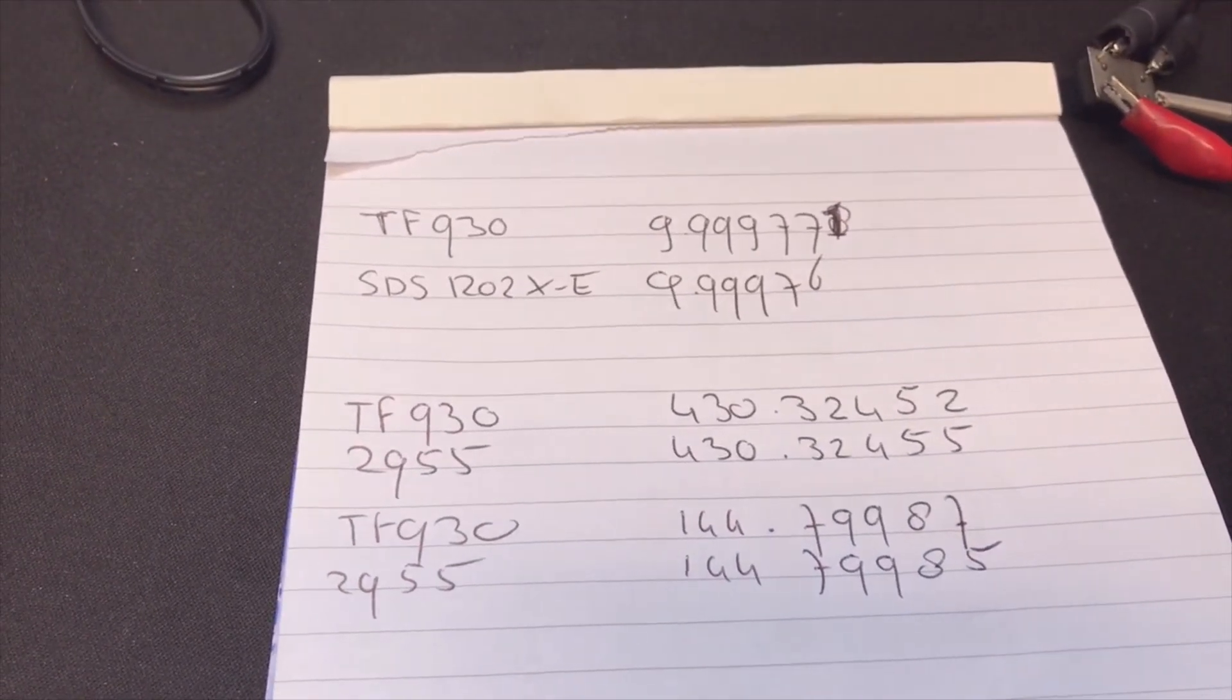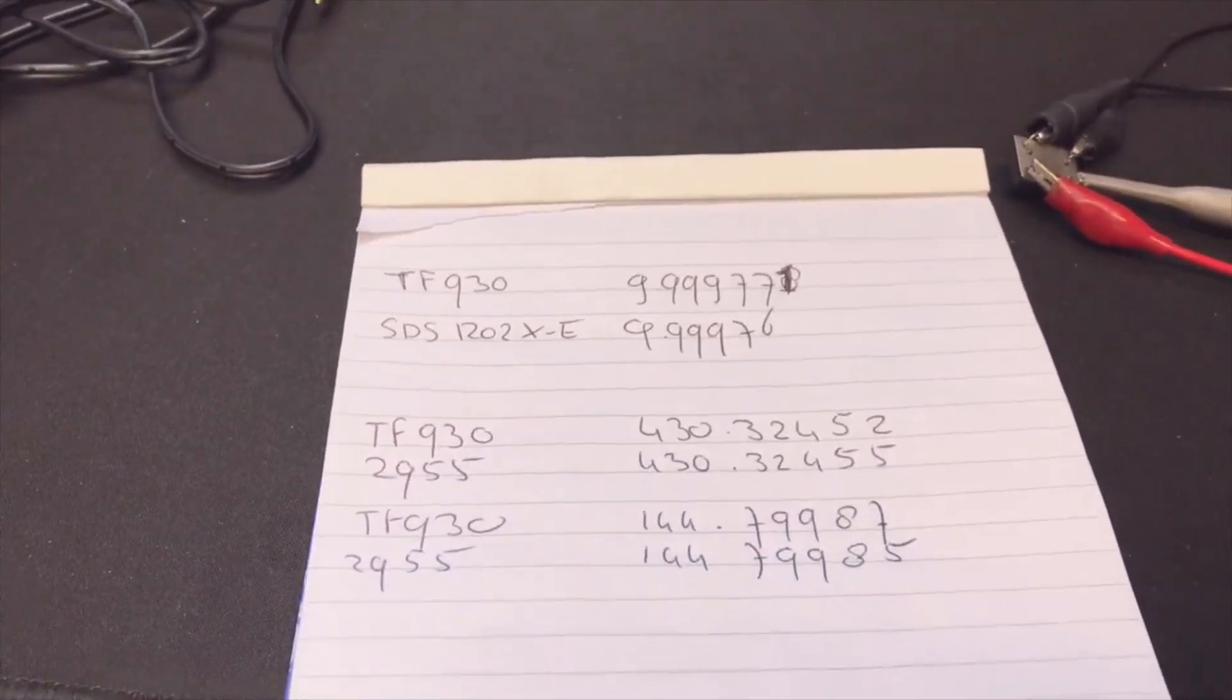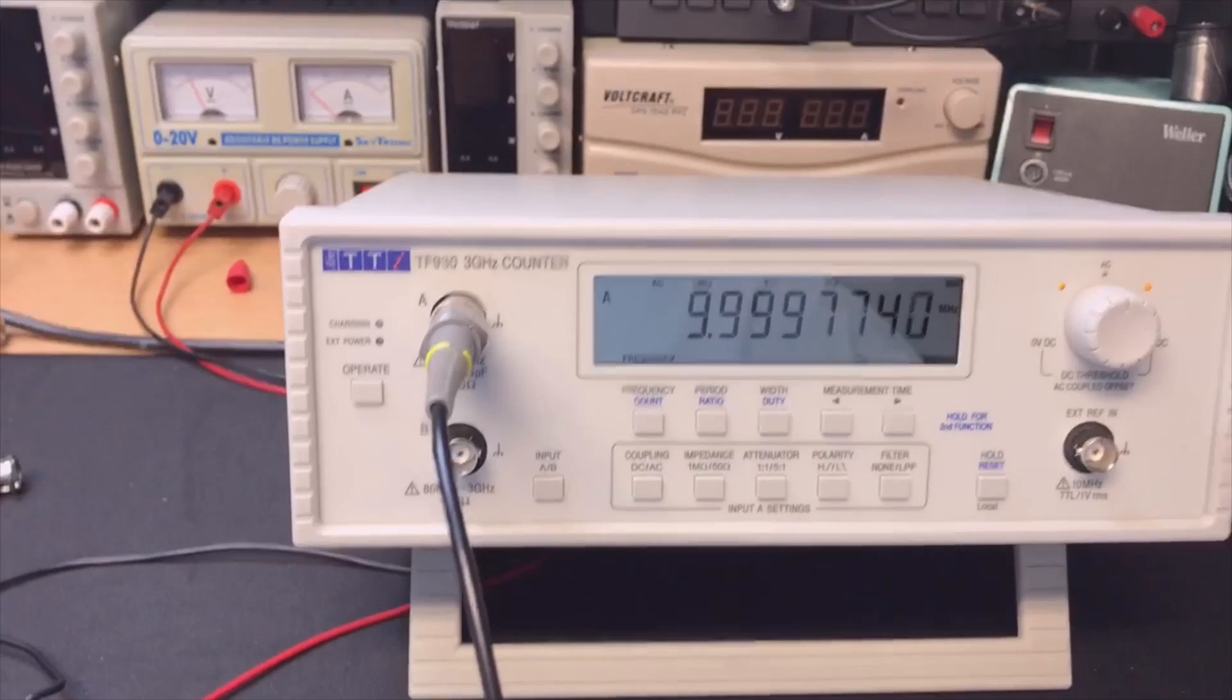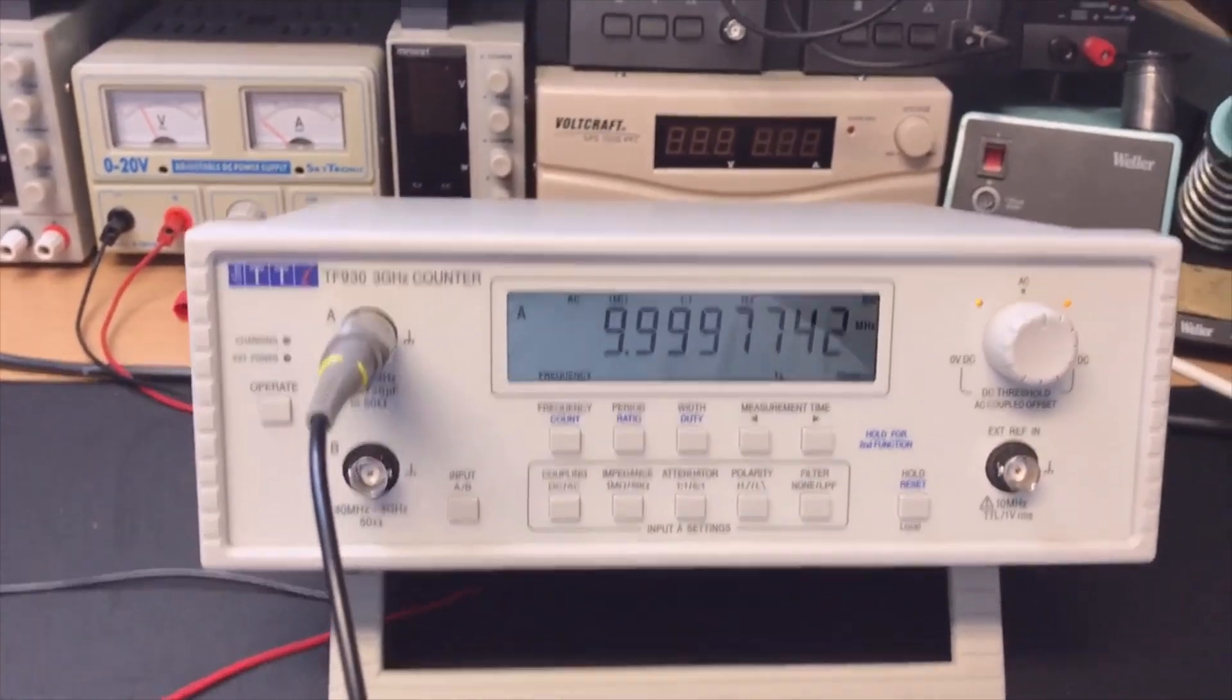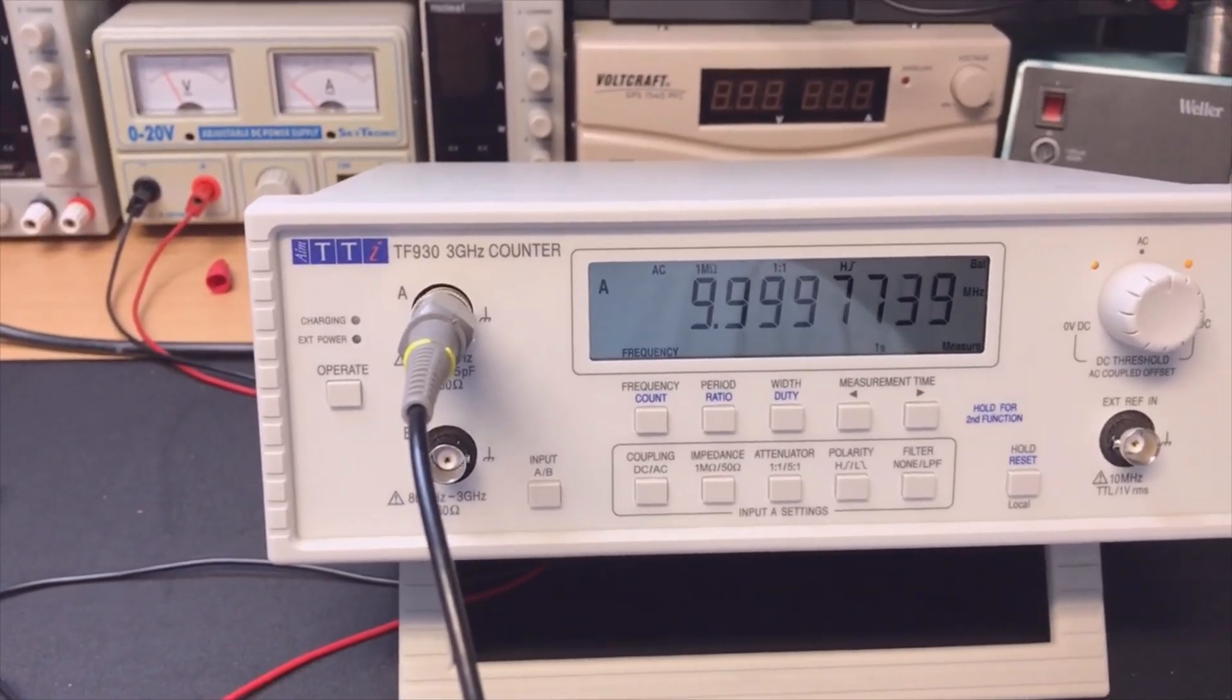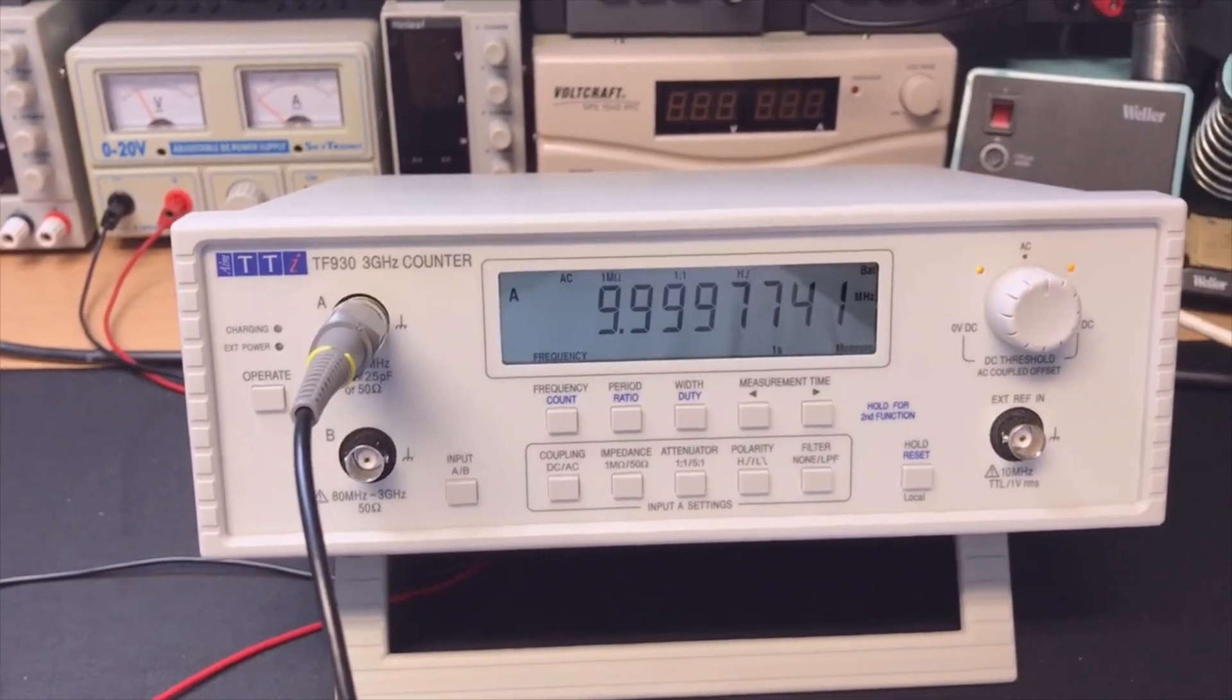It's nice you can take it out of the box and immediately start using it. Well, not that immediate, because they do advise you to have it at least switched on for more than 15 minutes so that the little crystal oven, the temperature compensated oscillator, can stabilize.